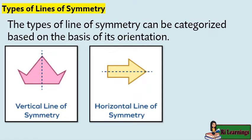If a horizontal line divides an object into two identical halves, it is called a horizontal line of symmetry.